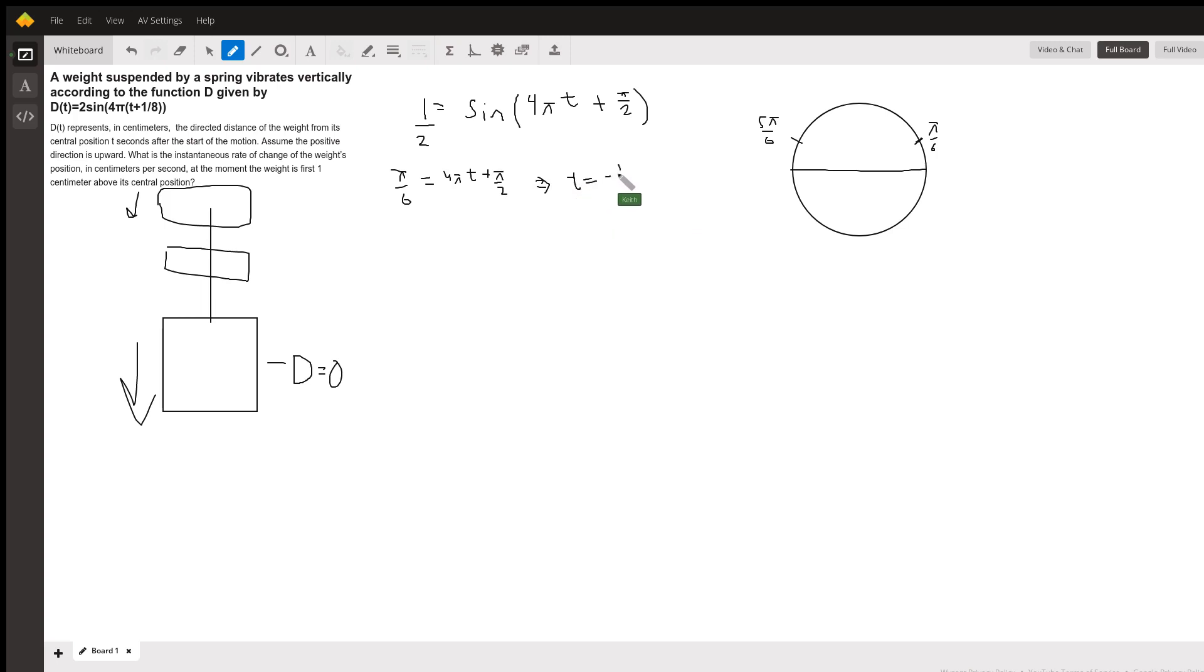Negative one twelfth. And we can't have this because our time has started at zero. It'd be kind of cheating to back up in time, so we're gonna have to keep going forward and try where 5π over six is our angle.